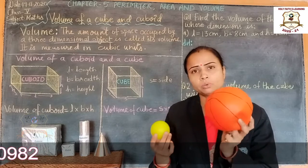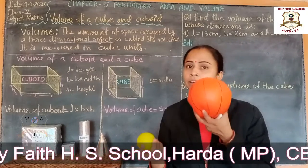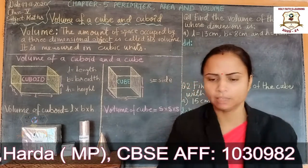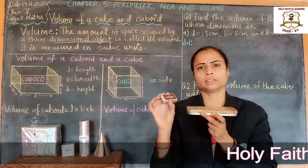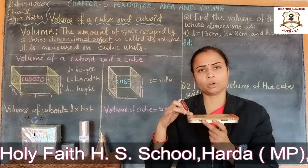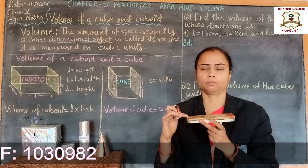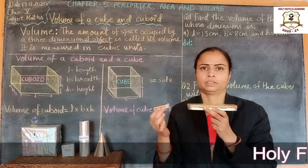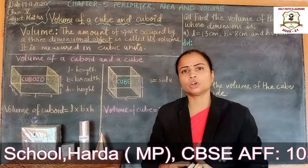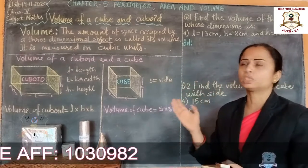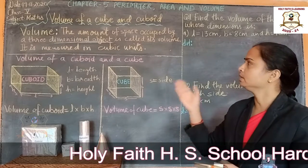This is because the orange ball occupies more space than the yellow ball, so the orange ball has a greater volume. Similarly, we have a pencil box and a matchbox. The pencil box occupies more space than the matchbox, so the pencil box has a greater volume. The amount of space occupied by a three-dimensional or solid object is called its volume. It is measured in cubic units.